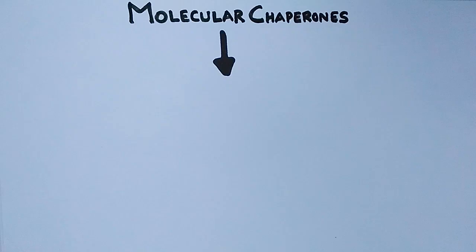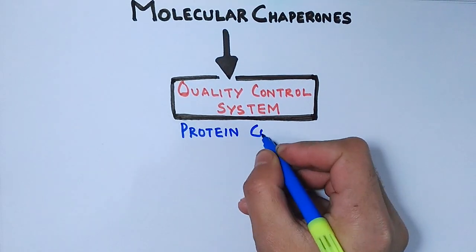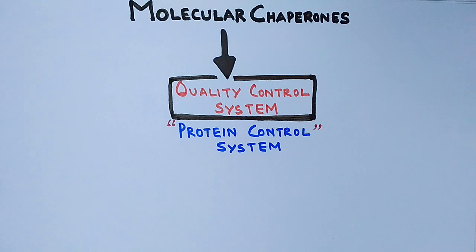These chaperones are a part of quality control system, particularly the protein control system, which is the mechanism by which a cell monitors proteins to ensure that proteins are in a stable and in a native state.